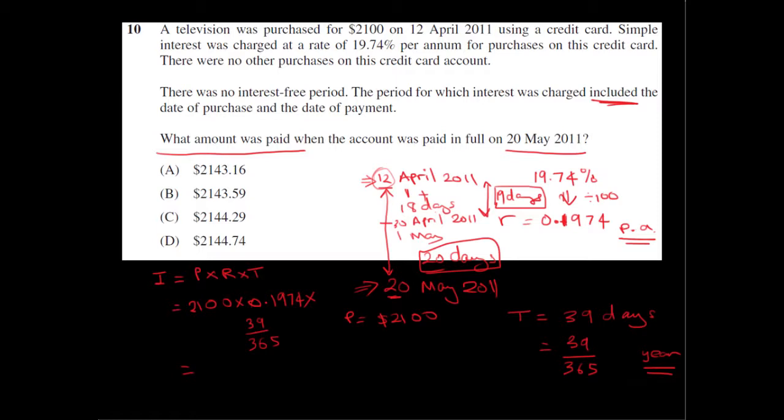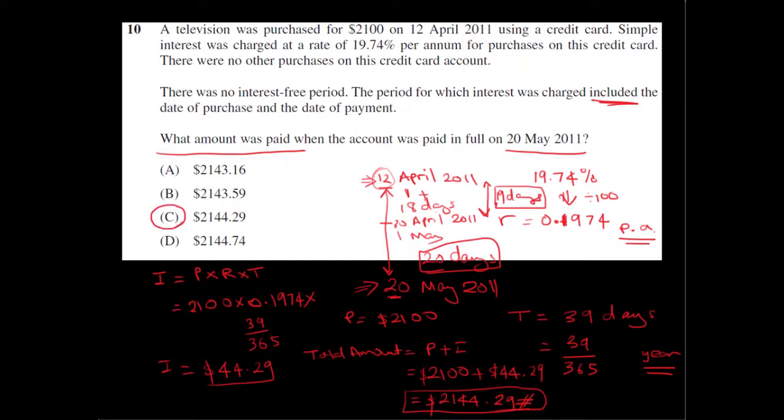Plug that into the calculator and we get $44.29 in interest. So that's not the answer. That's just the extra amount that's paid. So the total amount that this person has to pay is the principle plus the interest. The principle is $2,100. The interest is $44.29. Add it together and we get $2,144.29. So that's our answer, and that matches up with option C. So C is the answer.